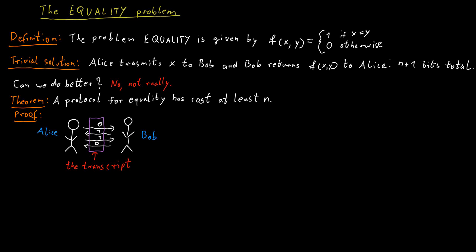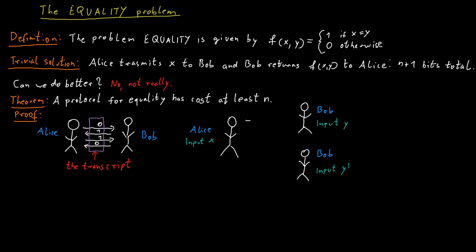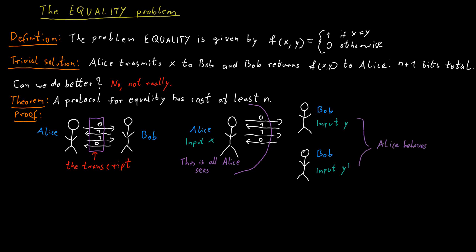Now suppose we have the same transcript whether Bob has input y or y prime. So in one case Alice has x and Bob has y — we look at the transcript. In the second case, Alice has x as well but Bob has y prime. And let's say the communication protocol is such that both of those cases lead to the same transcript. Then that means that the decisions Alice makes will be exactly the same in both cases, and also Alice will conclude that the function value is the same in both cases.